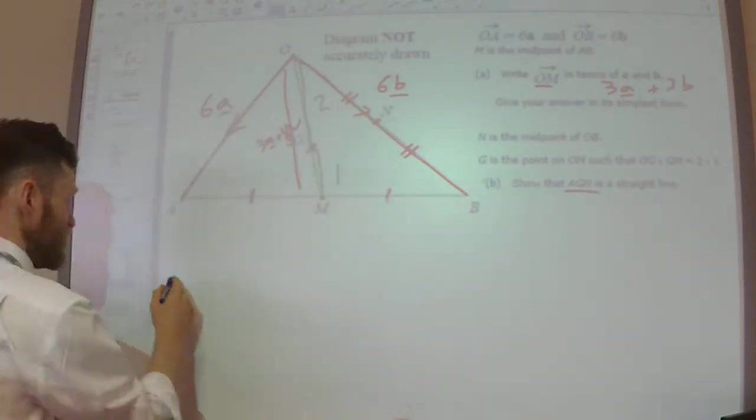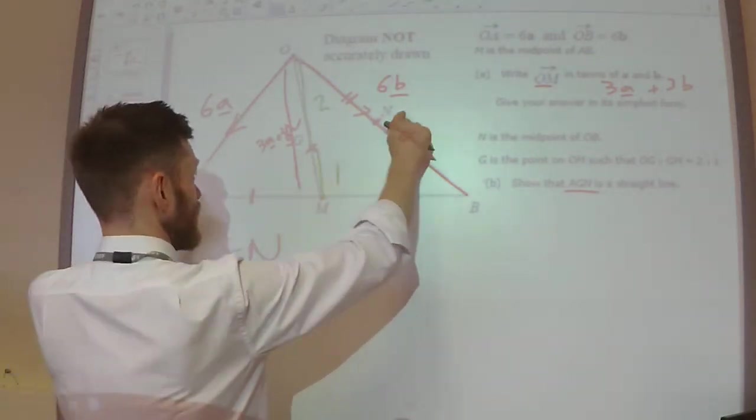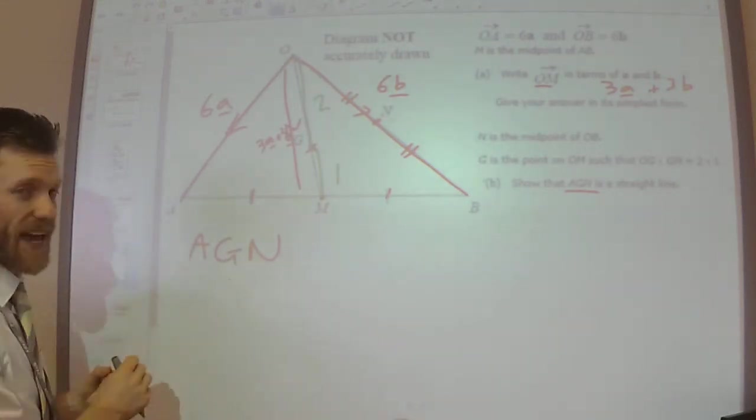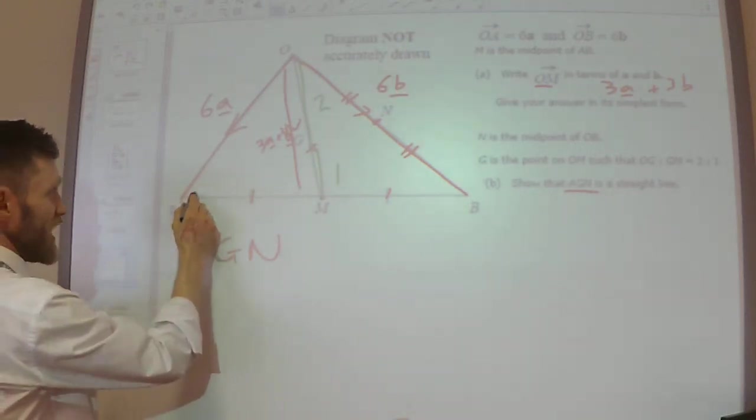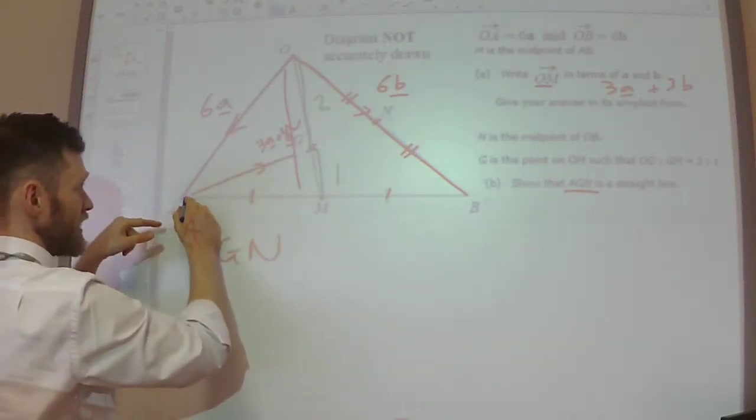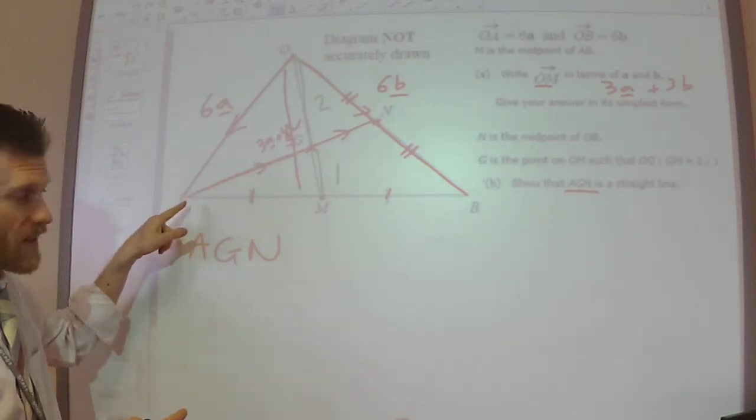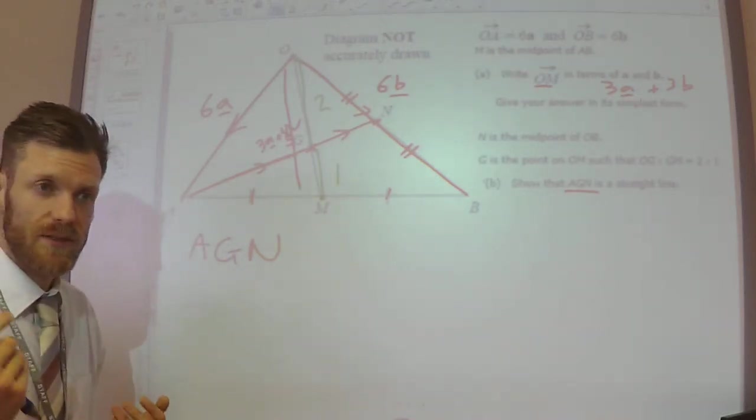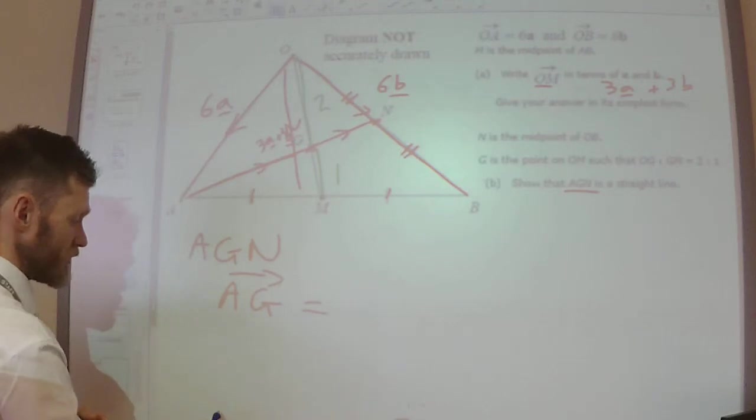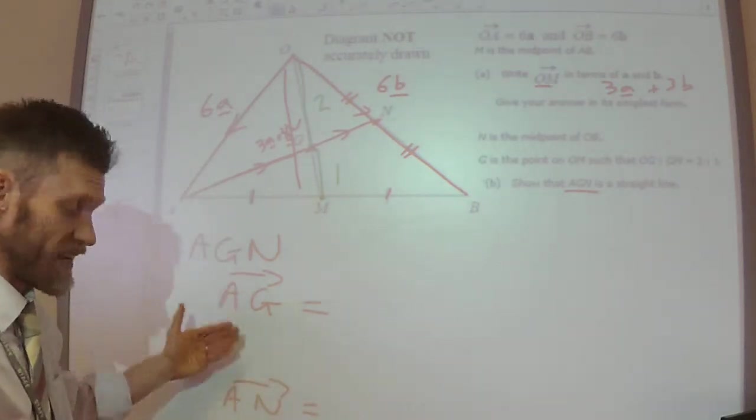The question says show that A, G, N is a straight line. Now what you should have learnt in GCSE is that if I want to show that A, G, N is a straight line, if I work out the vectors A to G and then the vector A to N, if those two vectors are parallel and they both go through the same point, which they do because it's point A, then it must be a straight line. So I'm going to work out A to G. Then afterwards I'm going to work out A to N. Then as long as what I get is parallel vectors, I've managed to prove that A, G, N is a straight line.